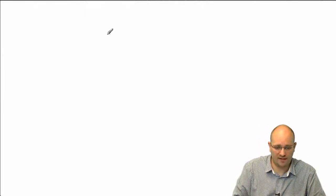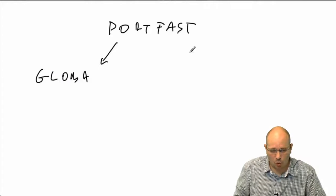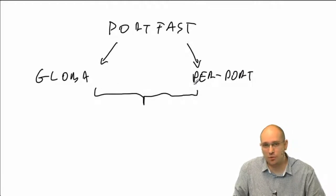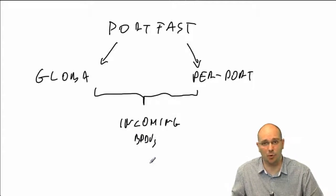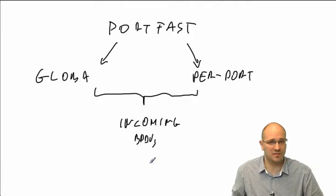First, a quick reminder about Portfast. Portfast can be configured using two different methods — it can be configured globally or it can be configured on a per-port basis. In both of these cases, the operational Portfast state on the port will be conditional on incoming BPDUs. If there are no incoming BPDUs on this port, the Portfast feature will be active. When a BPDU arrives on the port, the Portfast on this port will be turned off.